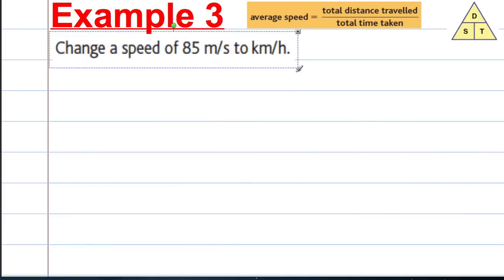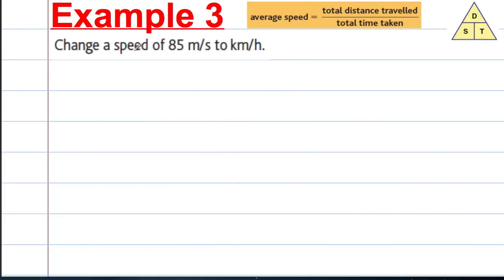Example three is a conversion. We just need to keep our wits about us here. Change the speed of 85 meters per second into kilometers per hour. Well, the first thing is, if you're going 85 meters per second, how far will you go in one hour? How many seconds in an hour? There are 60 seconds in a minute and 60 minutes in an hour, so that's 60 times 60, which is 3600 seconds in one hour.